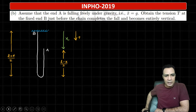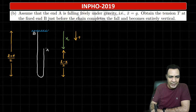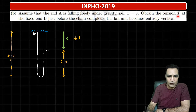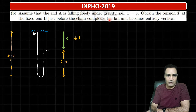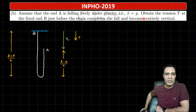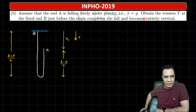In part B, they assume that end A is falling freely under gravity, so acceleration ẍ = g. We have to find the tension T at the fixed end B just before the chain completes the fall and becomes entirely vertical. I will find tension as a function of x, and when it is just about to become vertical, x will equal L. So we put x = L to find the tension at that moment.